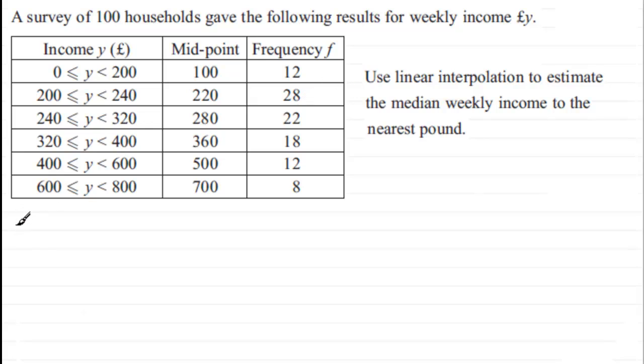So we'll start first of all with writing down the position of the median. We've got 100 values if you were to add up that frequency. Now we're dealing with continuous data here as opposed to discrete data, and so when it comes to working out the position of the median, we don't add one to the data and divide by two, we just simply divide by two.